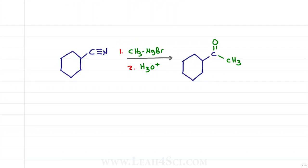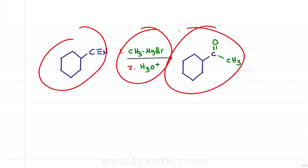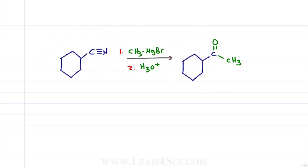In this Lea4Sci video we're going to look at the reaction and mechanism between a nitrile and Grignard to form a ketone along with a shortcut to quickly identify the products.